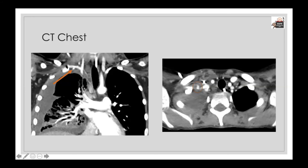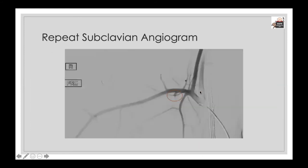Selected coronal and axial images from the contrast-enhanced CT confirmed the presence of a pseudoaneurysm at the site of arterial injury, visible both here and here. The patient then underwent a repeat subclavian angiogram which confirmed the presence of a pseudoaneurysm. A covered stent could have been used to exclude the pseudoaneurysm, but there are significant risks such as infection, stent migration, or occlusion. Therefore it was decided to attempt another balloon occlusion to see if this would make any difference.